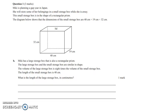Hi there, this is a question from 2017 exam 2. This is from the measurement and geometry section of the modules and this is question 1b. So Mickey is planning a gap year in Japan. She will store some of her belongings in a small box while she is away. The small box is in the shape of a rectangular prism as shown here. The diagram below shows the dimension of the small box are 40cm by 19 by 32.